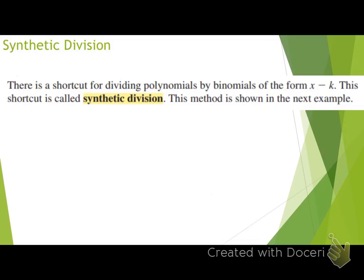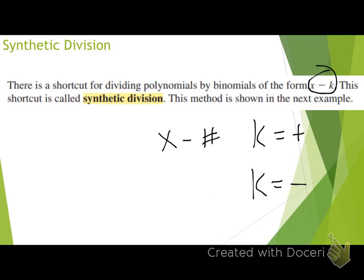There's only a certain time we can use synthetic division — you're not always going to be able to use it. We can only use it if our divisor is a binomial in this specific form. If our k value is a positive number, the divisor will be a binomial of the form x minus a number. If our k value is negative, then our binomial will take on the form x plus a number. So if it's in one of those two forms — x minus a number or x plus a number — then you can use synthetic division.